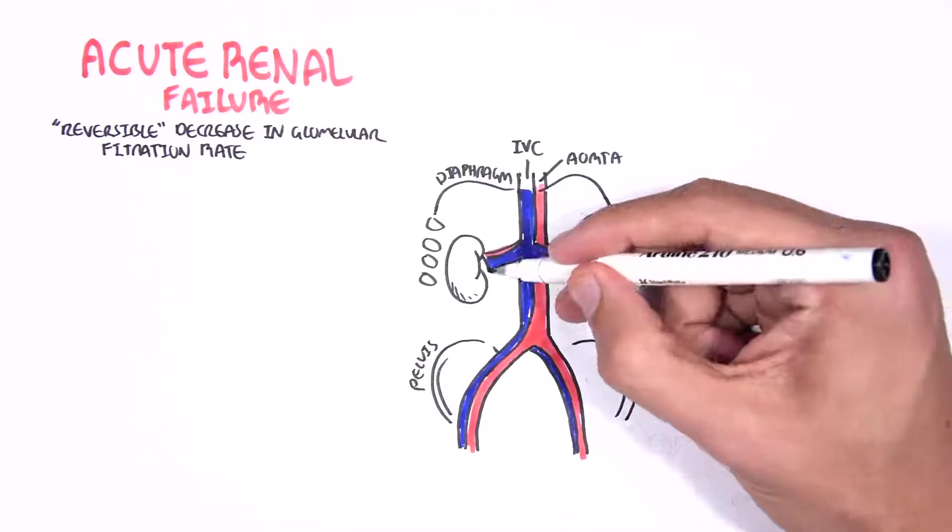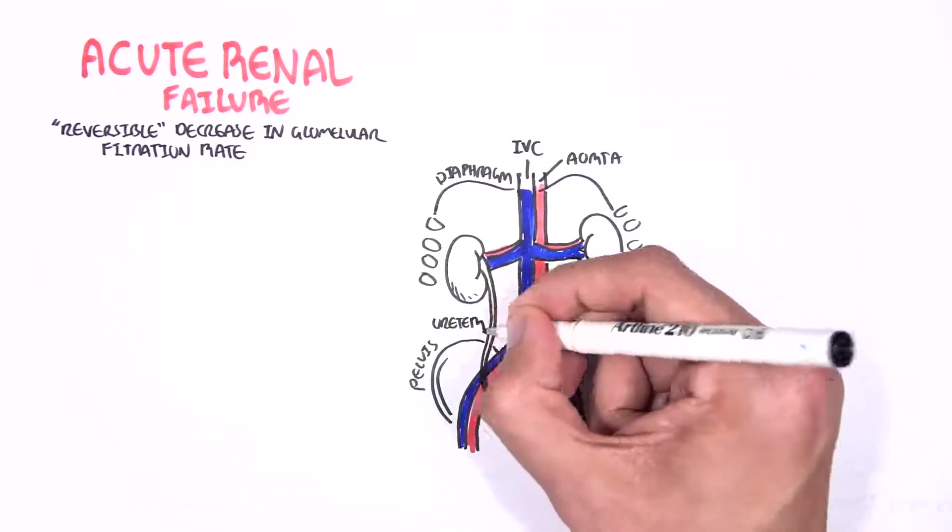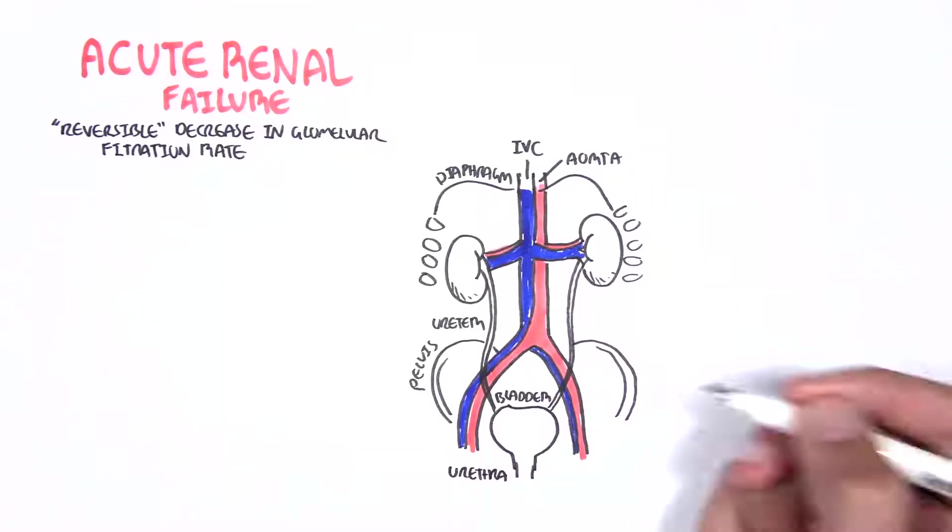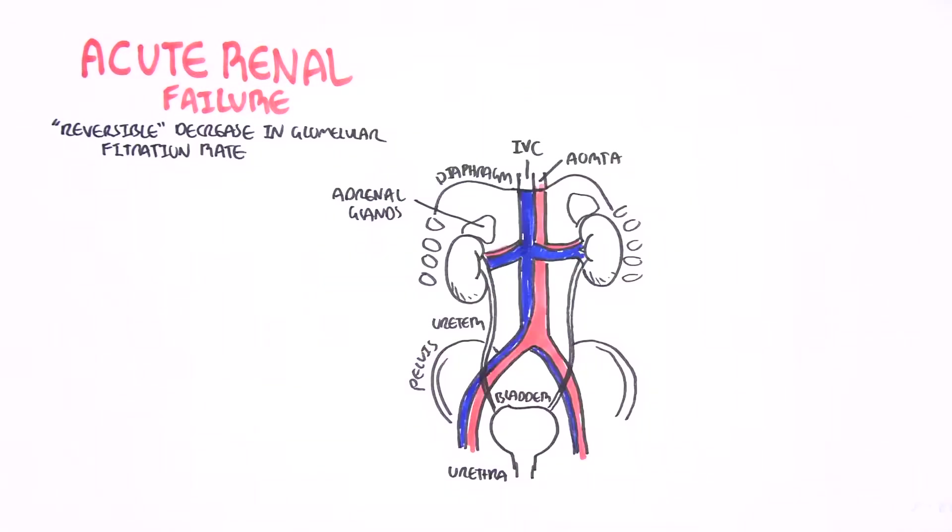Here we have the pelvis. The kidneys produce urine which travels through the ureter to the bladder. Urine is stored in the bladder and when needed, the bladder will contract and expel urine through the urethra. Above the kidneys we have glands known as adrenal glands which produce important hormones.